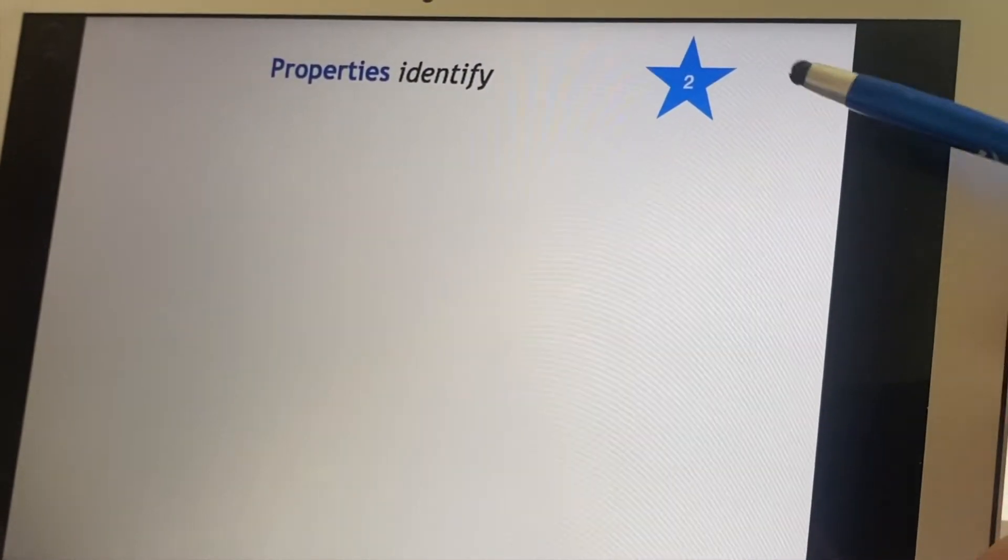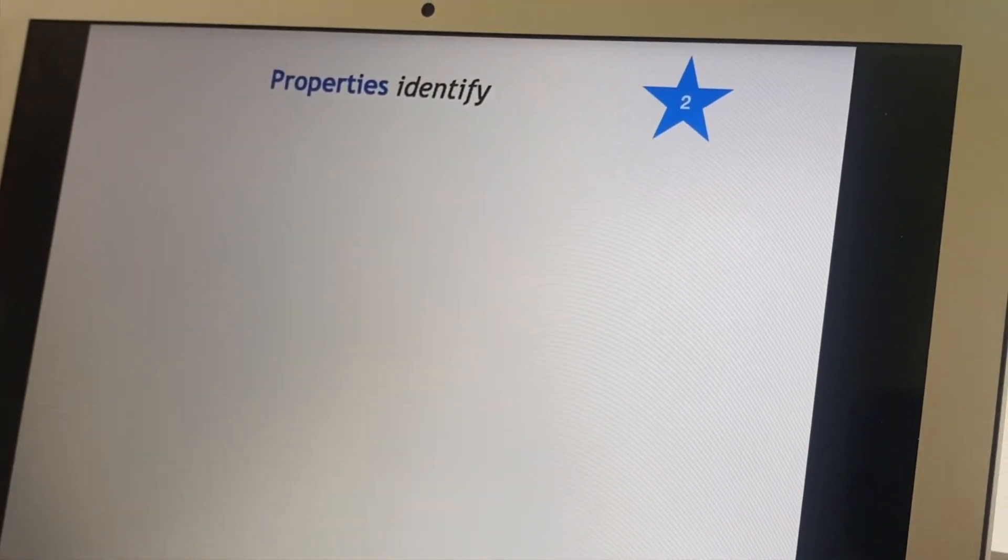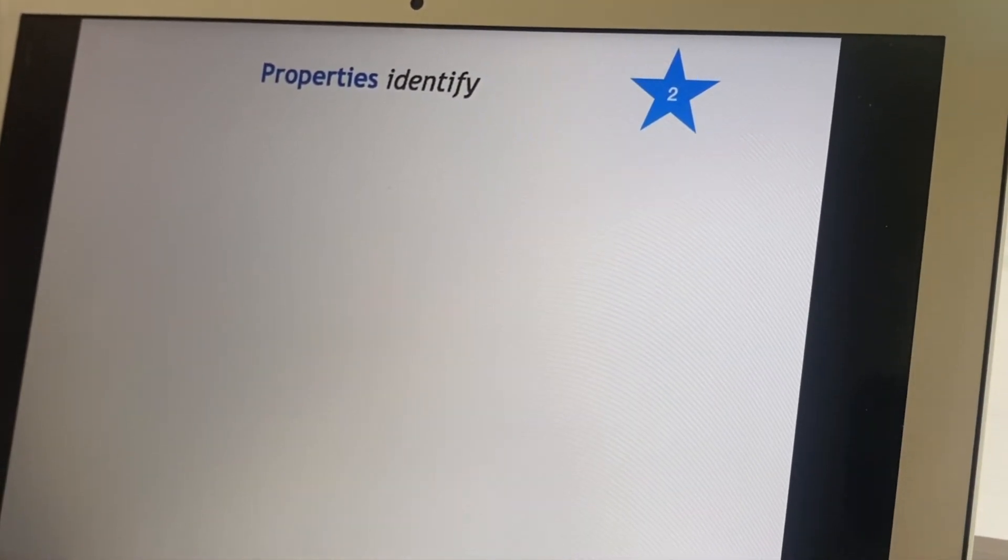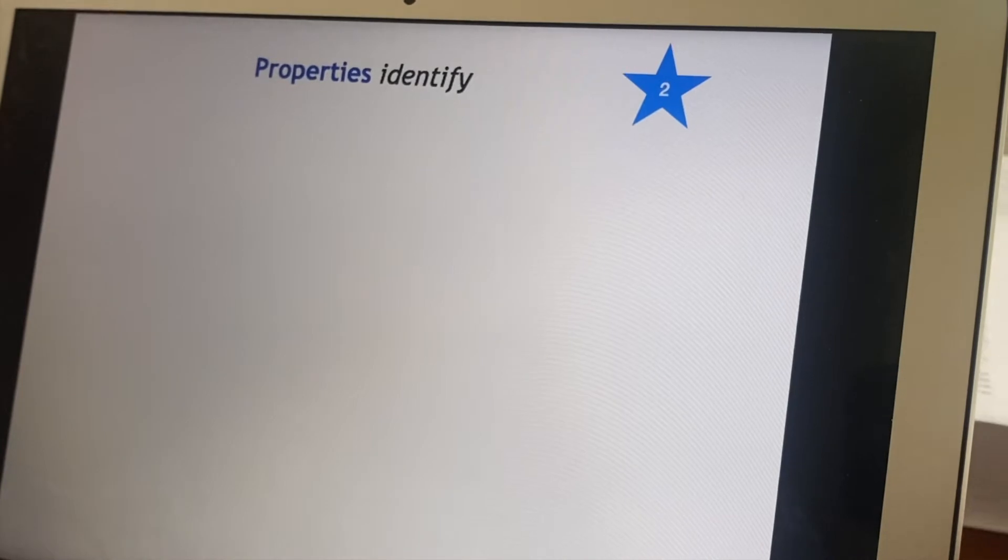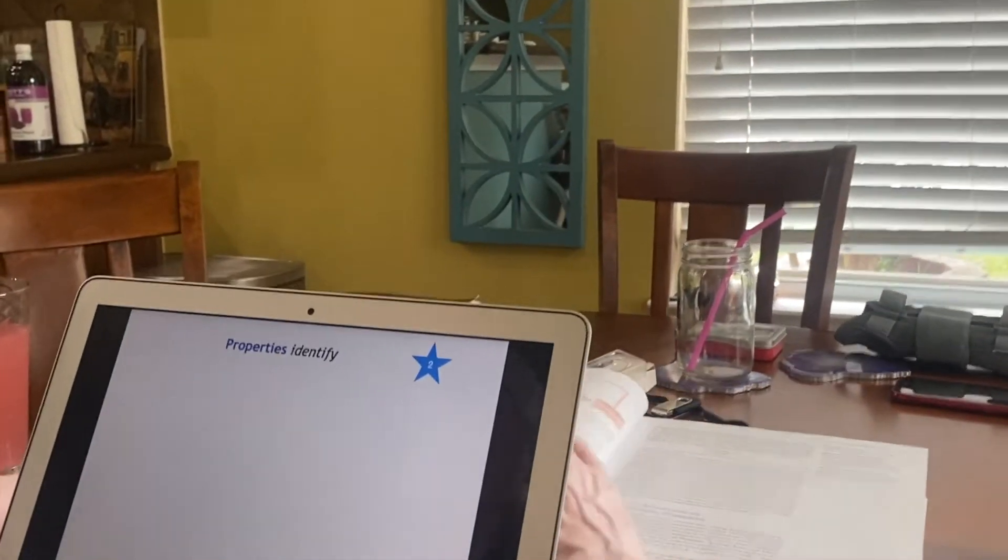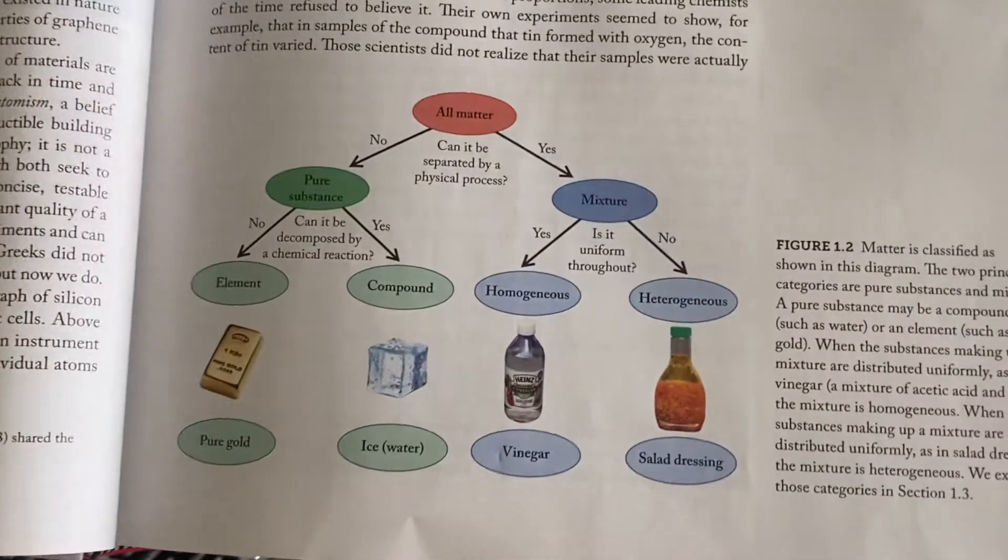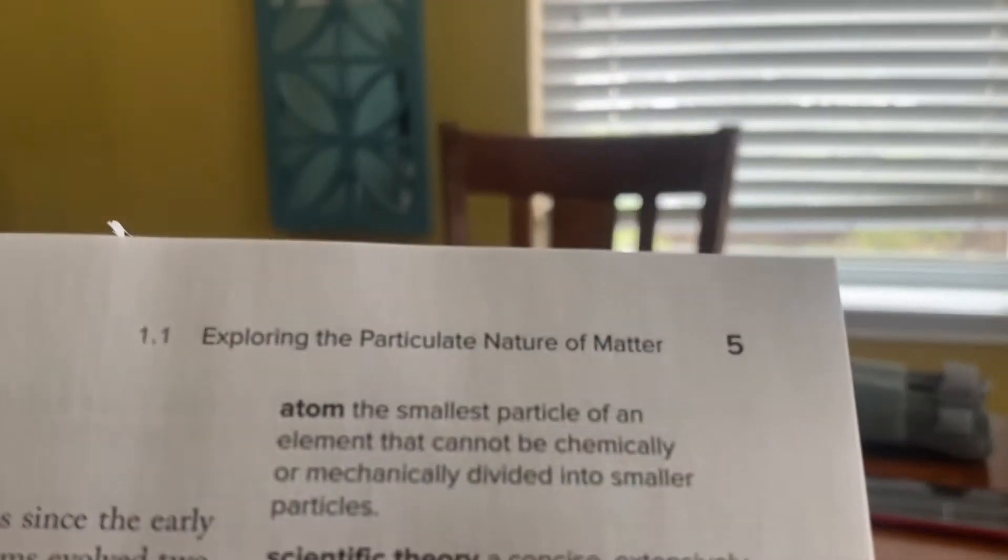Now you also see I have another star. Whenever I have a star, it means I'm going to refer to something else or I'm going to be writing out a problem, but this one I'm going to show you another picture. This one is also in your book and is figure 1.2.